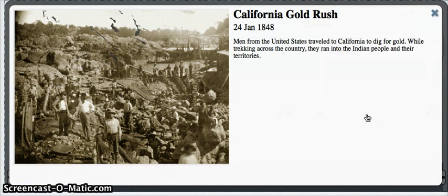James W. Marshall found gold on his property in Coloma, California in January of 1848. Men from all over the country traveled to dig for gold.